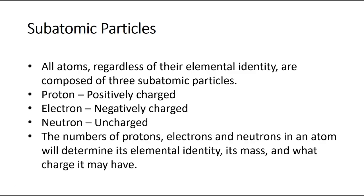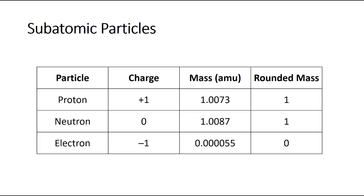The relative numbers of these three things — protons, electrons, and neutrons — will tell us three things about the atom: what its elemental identity is, what its mass is, and whether it has a charge, and if so, what the magnitude, whether it's positive or negative, and what the magnitude of that charge is.